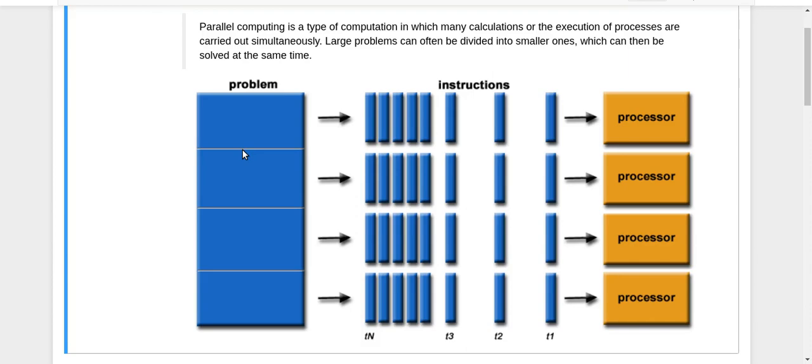You can do that if you have multiple processing units. Let's say you have four processors here. What you do is give the first part to the first processor, the second part to another, and so on. In this way, your large problem can be divided into smaller ones and all those sub-problems can be solved at the same time.